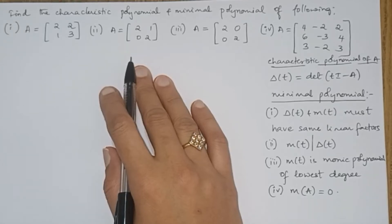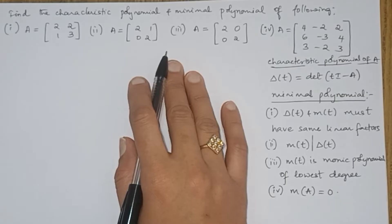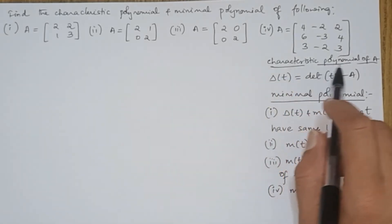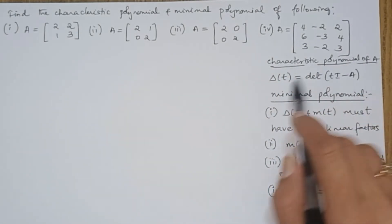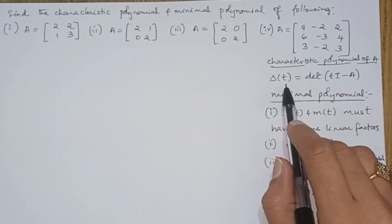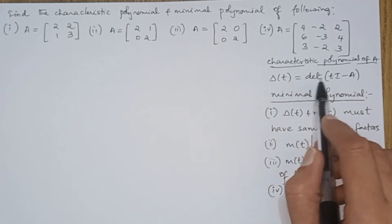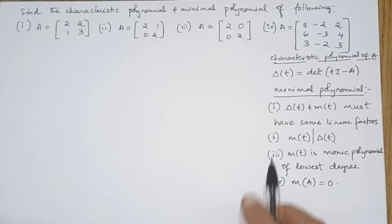In this video I will explain how to find the characteristic polynomial and minimal polynomial of a given matrix. The characteristic polynomial of any matrix A is denoted as delta(T) and is given by the determinant of (T·I minus A).